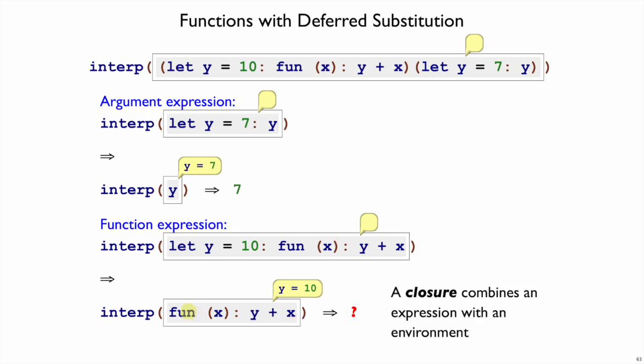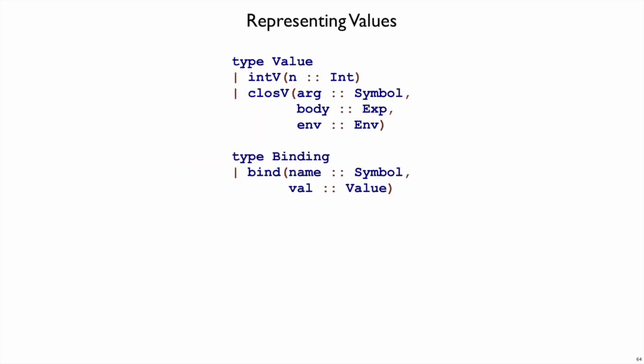What this turns out to be is a question of how we represent function values when we have environments. And what we need to do is represent a function value with a closure that remembers both of these pieces. It needs to remember the function expression, but also any environment that we had when we got to that function expression, because these are substitutions that should have, in principle, happened to that function. In fact, we don't really need the word fun here. What we need is the argument name, the body expression, and the environment. And that's the same as these two pieces.